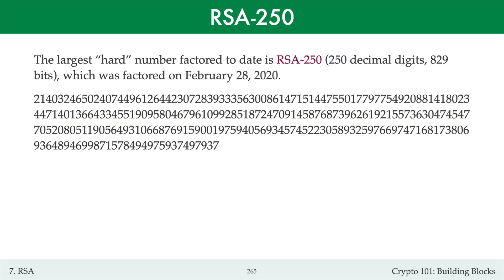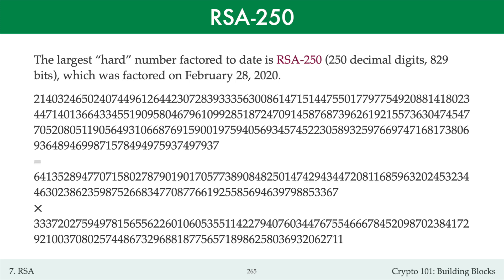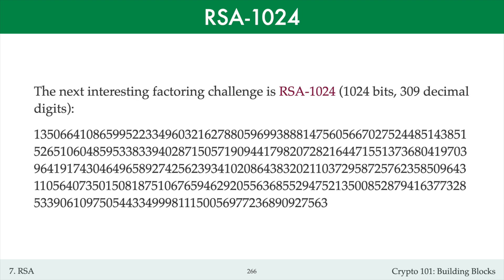To give you an idea of the size of these numbers, here is the challenge number RSA-250 that was factored in 2020, and here are its two prime factors. The next factoring challenge of interest is RSA-1024, which is a 309 decimal digit number.